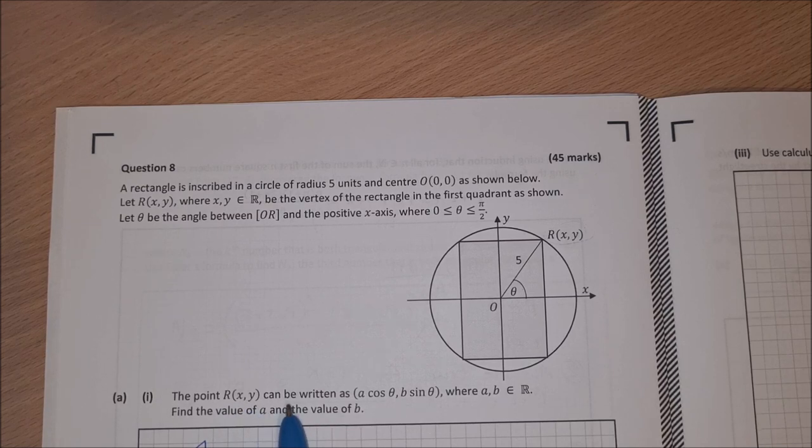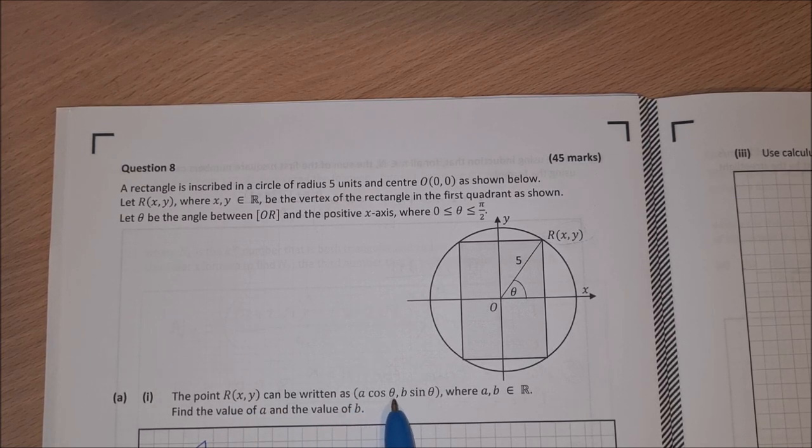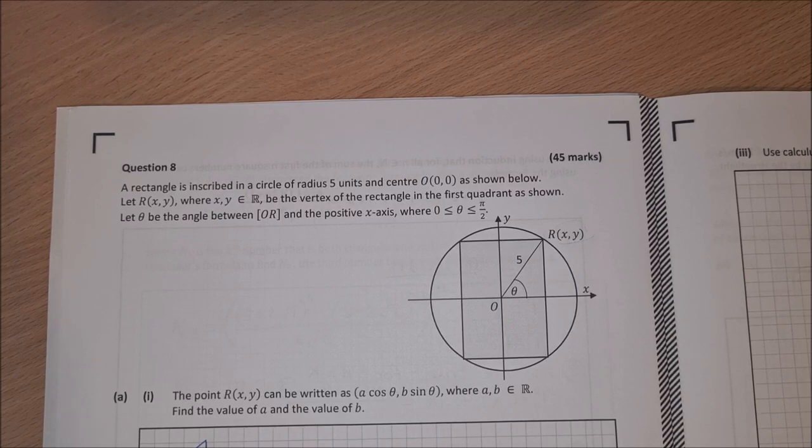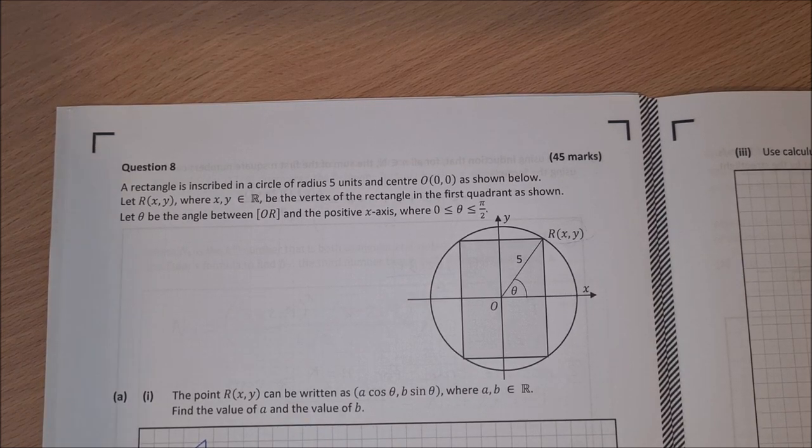The point R, which is (x, y), can be written as A cosine theta, B sine theta, where A and B are elements of R. Find the value of A and the value of B.